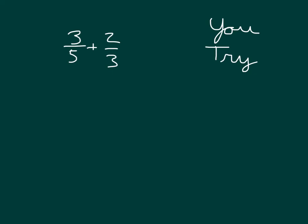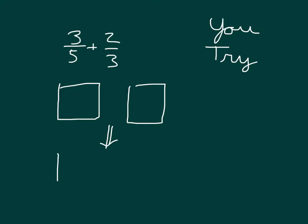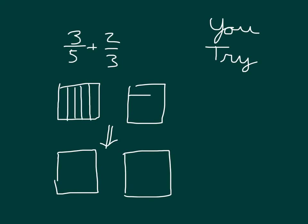Okay, it's your turn to try. Go ahead and start by modeling 3-5ths and modeling 2-3rds, and then getting equivalent fractions for each. Pause the video. Did you start with 5ths and with 3rds? Remember, we're looking at 3 of those 5ths, so we shade in 3, and we're looking at 2 of those 3rds, so we shade in 2. So this is 3-5ths and this is 2-3rds.